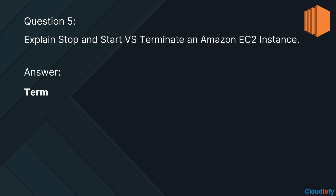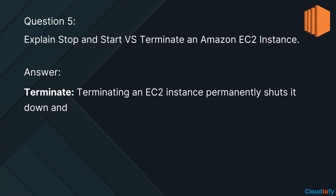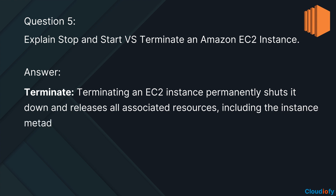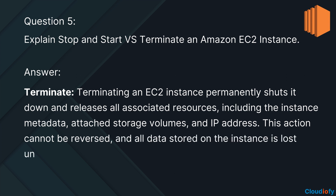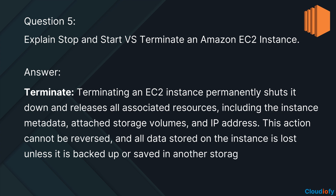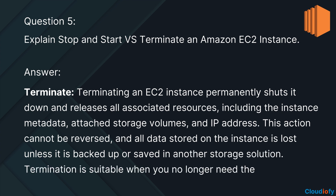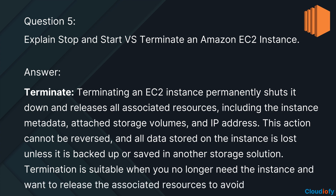Terminate: terminating an EC2 instance permanently shuts it down and releases all associated resources, including the instance metadata, attached storage volumes, and IP address. This action cannot be reversed, and all data stored on the instance is lost unless it is backed up or saved in another storage solution. Termination is suitable when you no longer need the instance and want to release the associated resources to avoid ongoing costs.